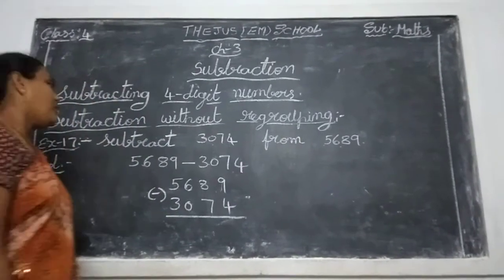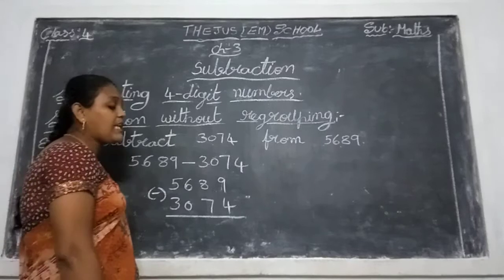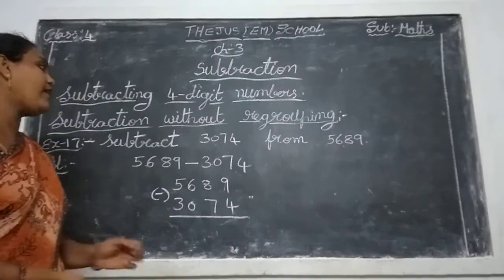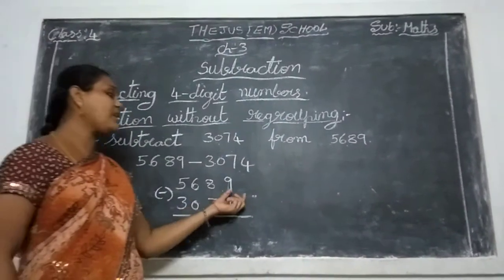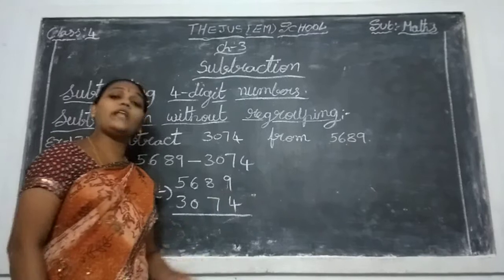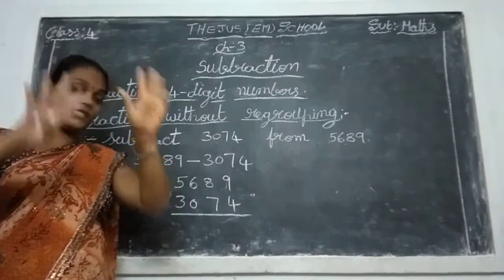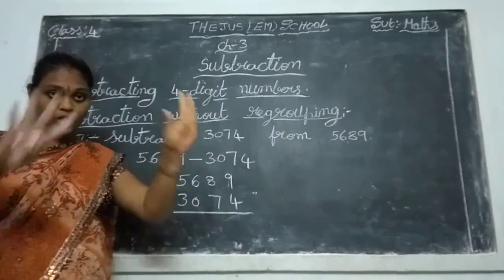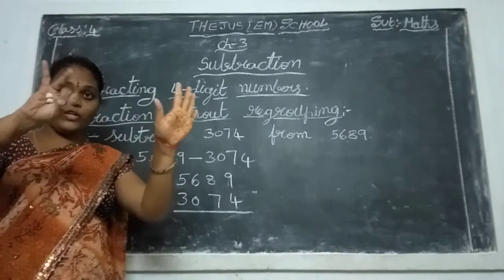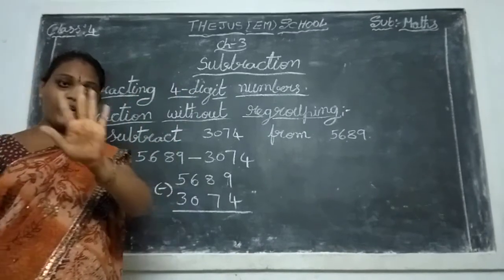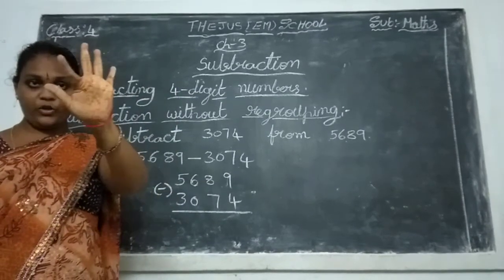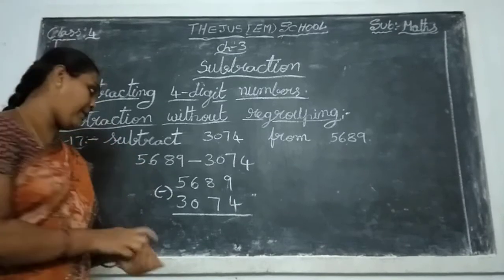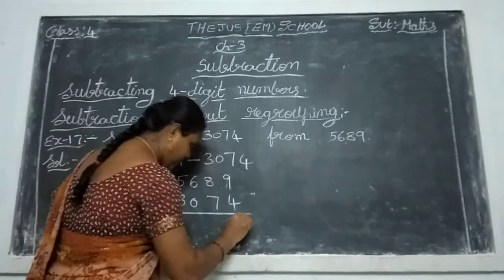So, take fingers for the subtraction method. First, what is the first number here? Nine. Take nine fingers. What is the second number here? Four. Close four fingers — one, two, three, four. Rewriting: one, two, three, four, five. The answer is five here.